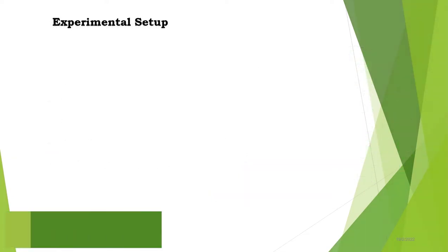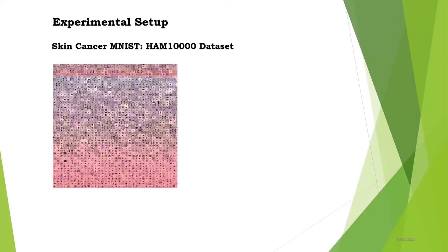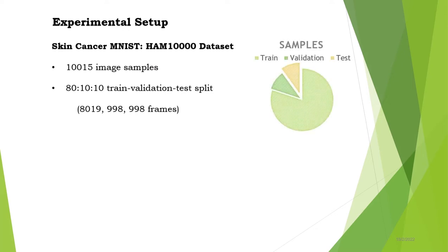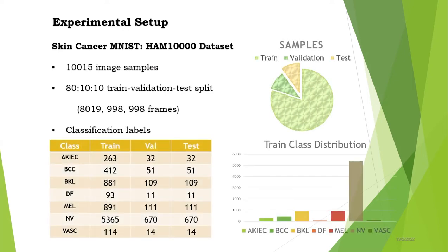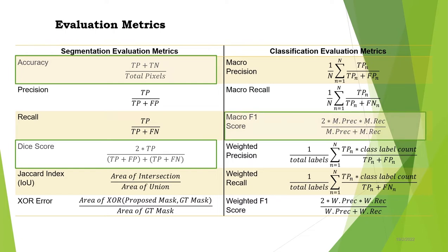For most experiments, the HAM10000 dataset — known as the MNIST for Skin Cancer — has been used for training and testing models. The dataset was split into train, validation, and test sets at 80-10-10. Despite being imbalanced in nature, the seven classes have an equal distribution over the three subsets. Metrics used for evaluation include the DICE score as the main segmentation metric, and accuracy and macro F1 score for classification.